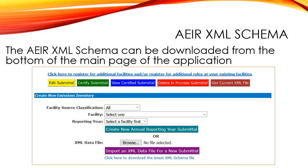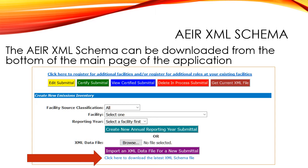The AEIR XML schema file can be downloaded from the bottom of the main page of the application. Clicking on this link within the application will allow you to download the latest XML schema file, which you can save to your local machine and use to validate your XML file before uploading it to the AEIR application.